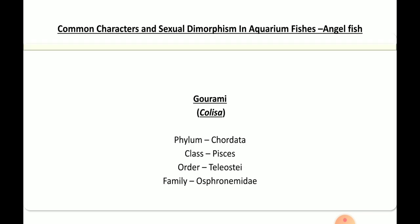The first fish is gourami. Before discussing its common characteristics and dimorphism, we need to know its classification. The scientific name is Colisa. It belongs to phylum Chordata, class Pisces, order Teleostei, and family Osphronemidae.